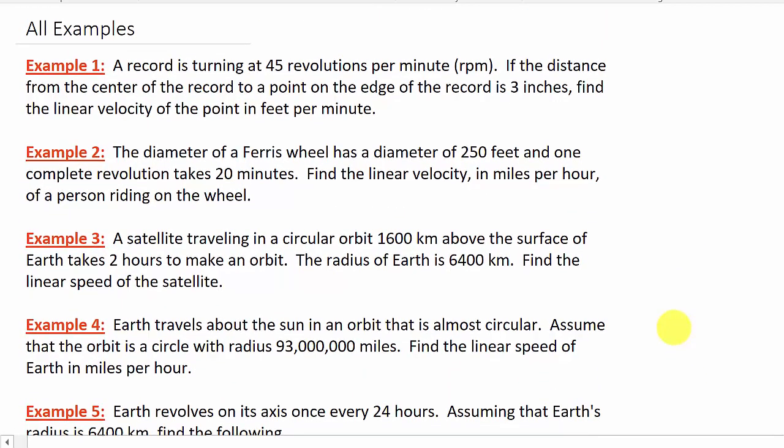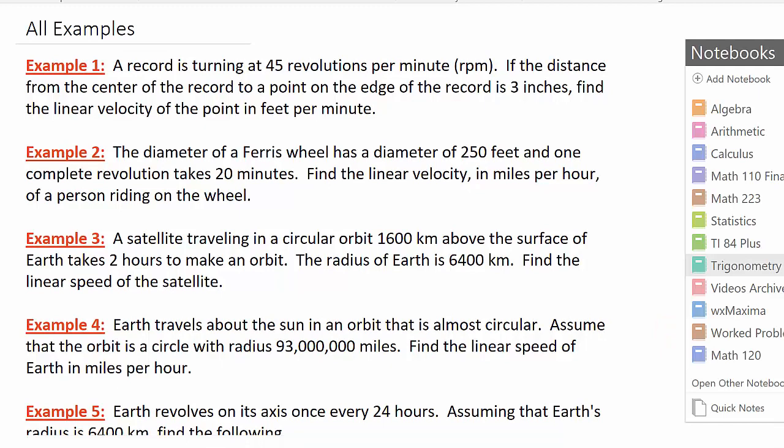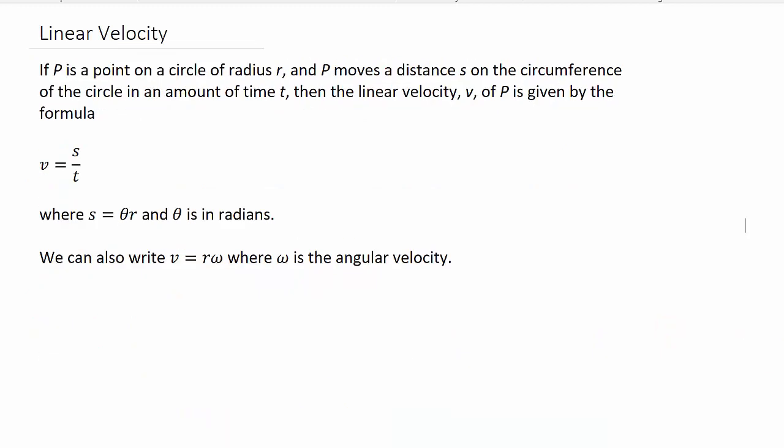But before we get into looking at the problems, let's look and see linear velocity. It says if P is a point on a circle of radius R and P moves a distance S on the circumference of the circle in an amount of time T, then the linear velocity V of P is given by the formula V equals S over T, where S is theta times R and theta is in radians.